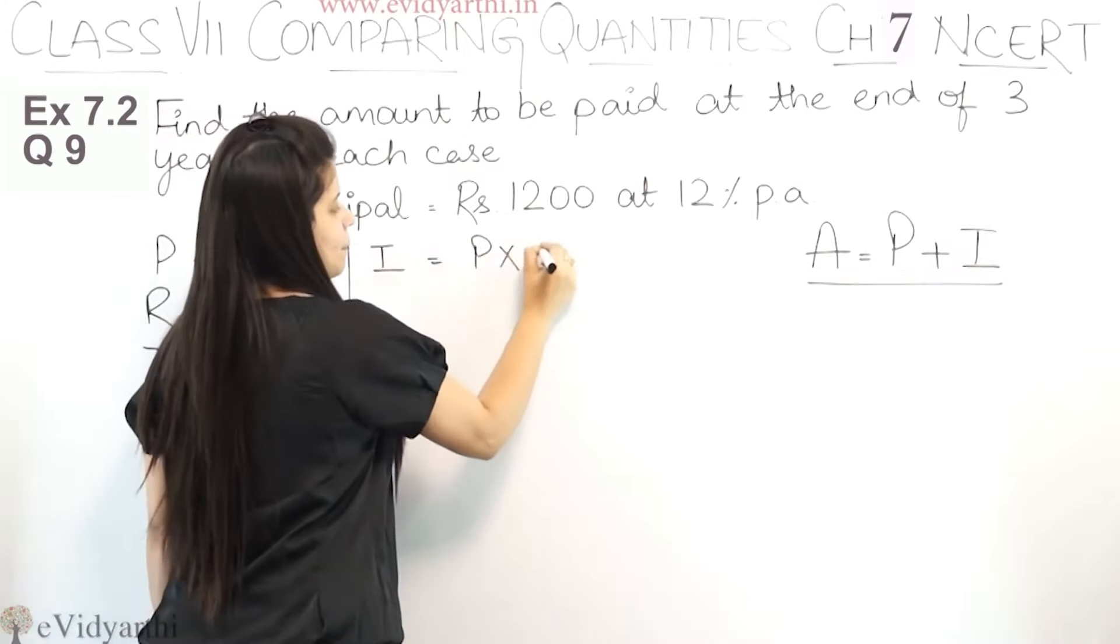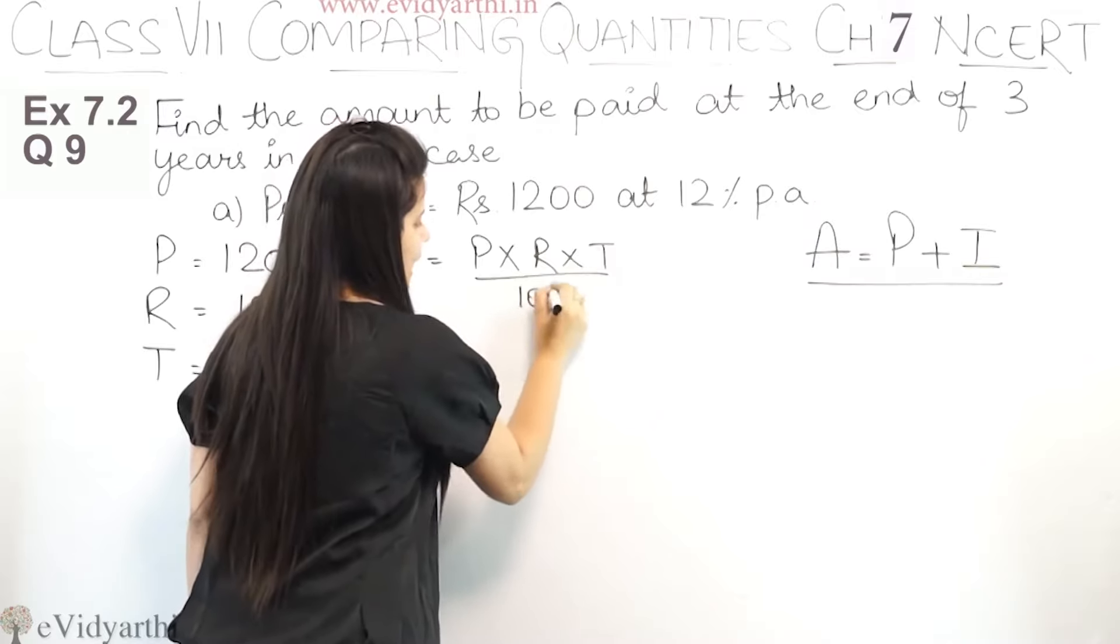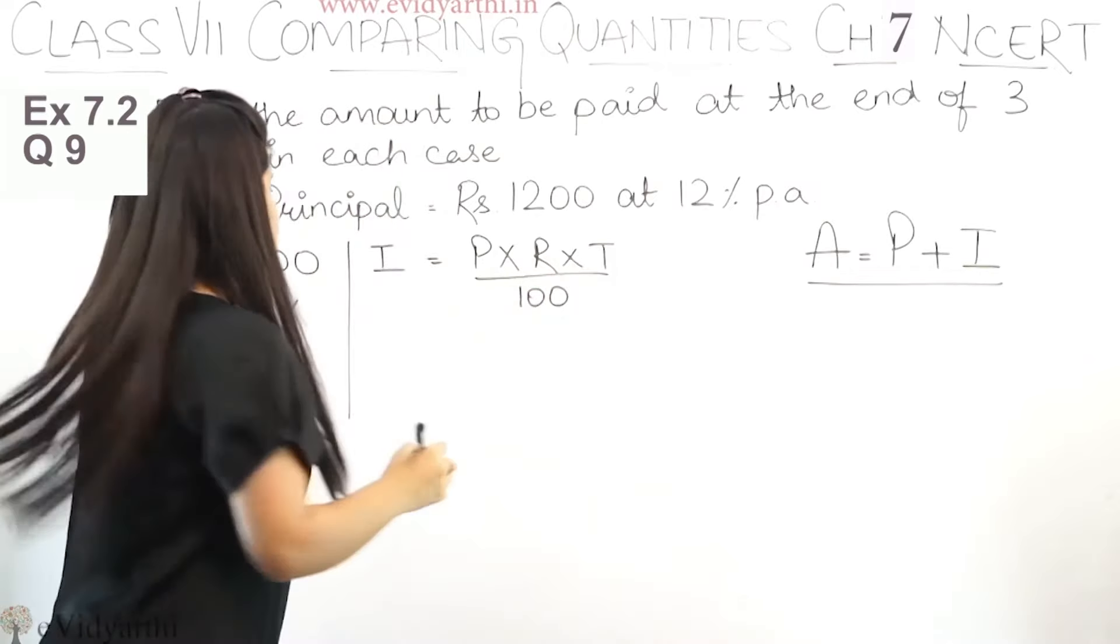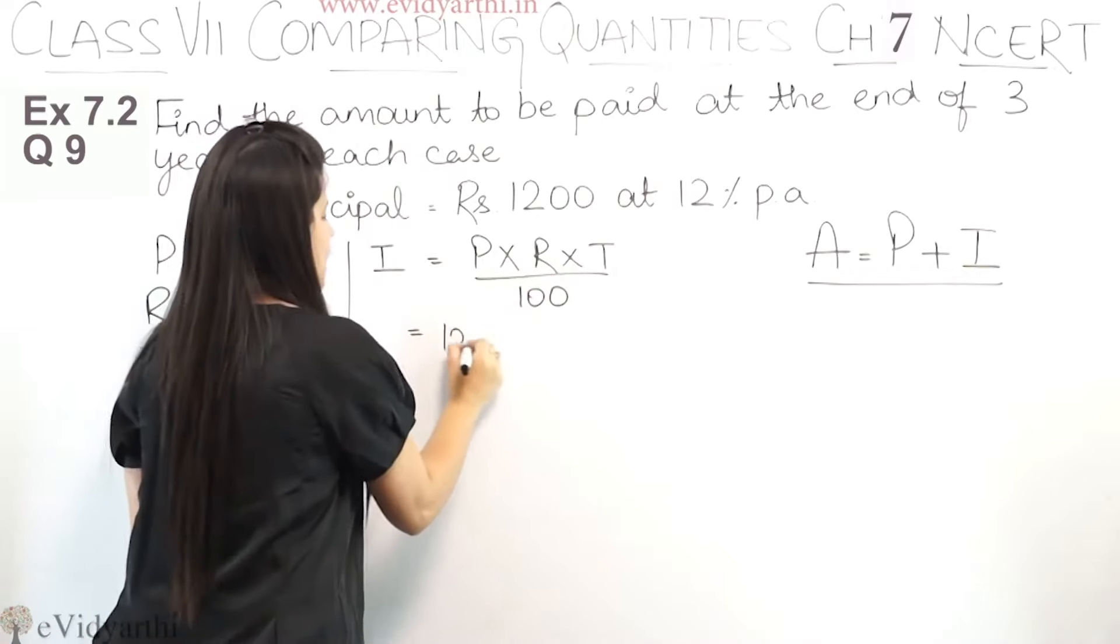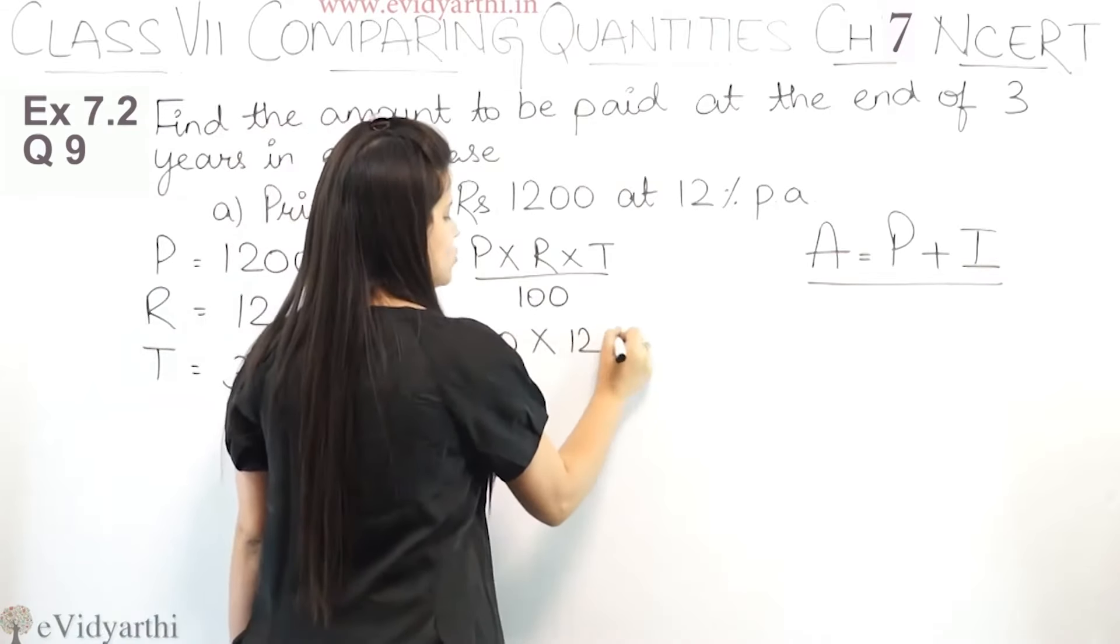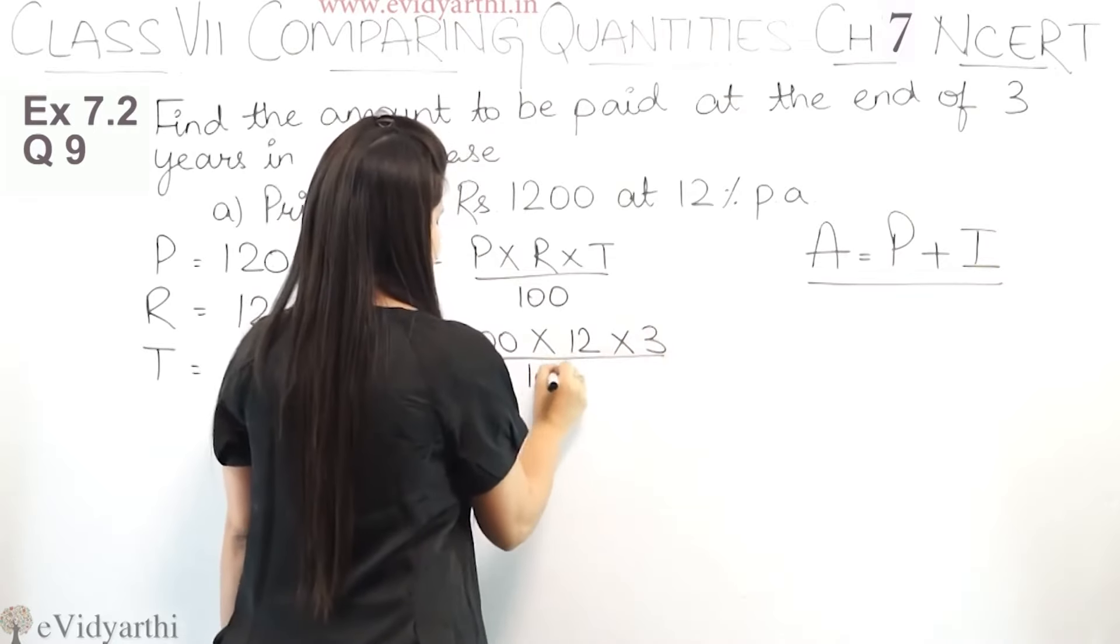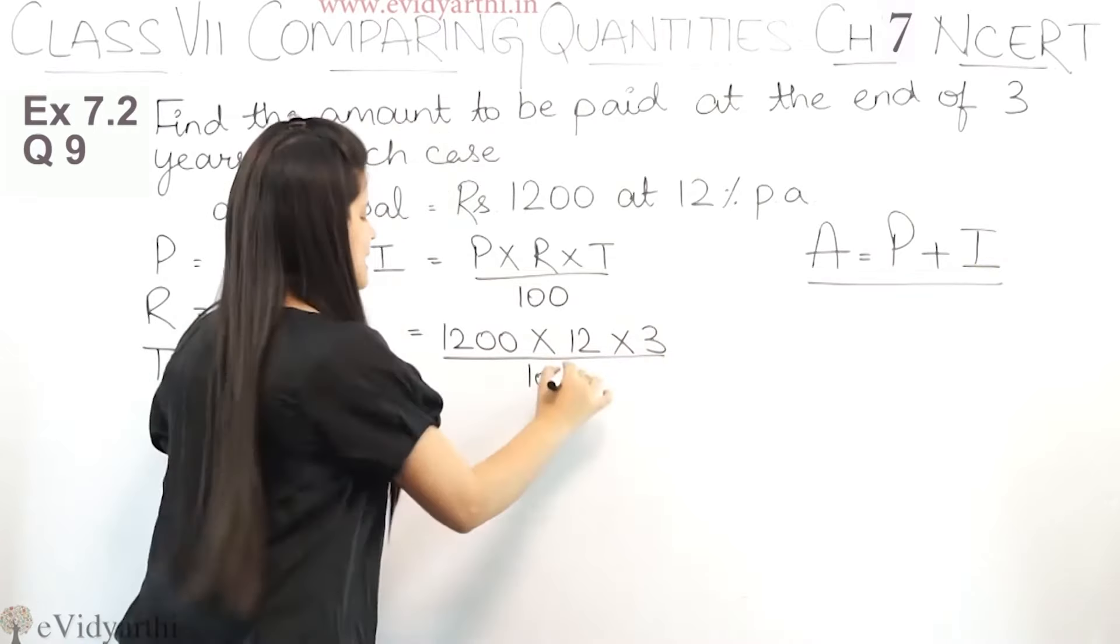So how do we find the amount to be paid? The interest formula is P into R into T upon 100.